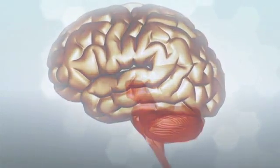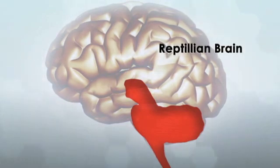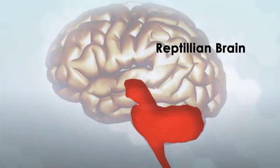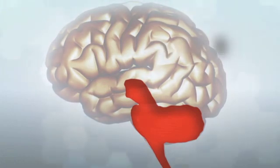The first, lowest area deals with our physical and unconscious functions like breathing, heart rate and hunger and is known as the reptilian brain because we share it with reptiles like alligators.